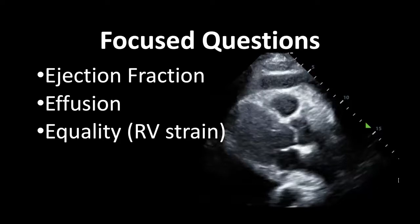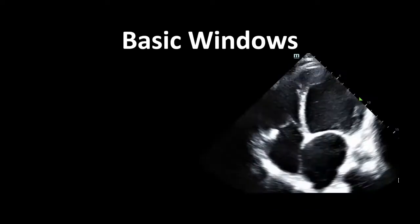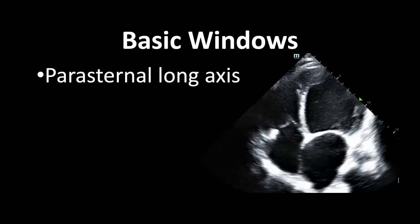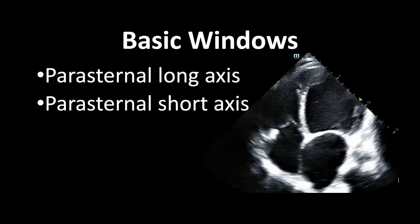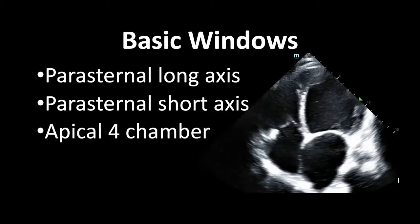There are four main windows that we look at with cardiac ultrasound. The first is your parasternal long axis view, then your parasternal short axis view, your apical four-chamber view, and your sub-xiphoid view. We're going to go through each of these one by one — how to obtain them and how to figure out what exactly you're looking at.